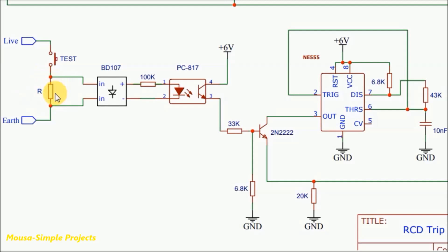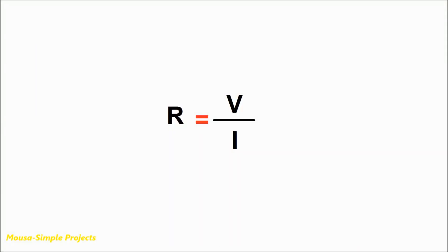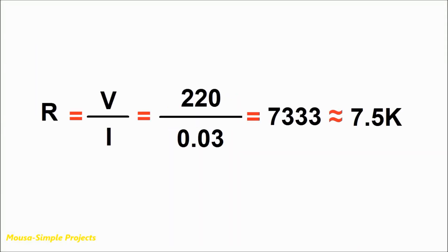You can calculate the value of this resistor by using Ohm's law. For example, for 30 mA leakage current, you need a 7.5 kOhm resistor.